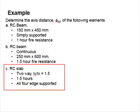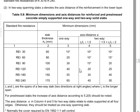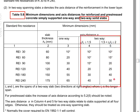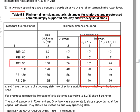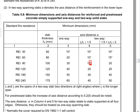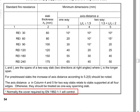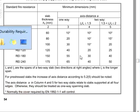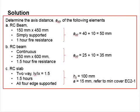The third question is an RC slab — specifically a two-way RC slab, so you refer to Table 5.8. Looking at the column where LY per LX equals 1.5, with a fire rating of one and a half hours — that's 90 minutes — the minimum thickness is 100 mm and your axis distance A should be 15. Note there is a star symbol, meaning the nominal cover should govern the cover of your slab instead of the axis distance.